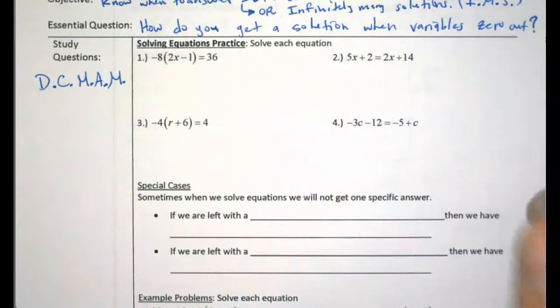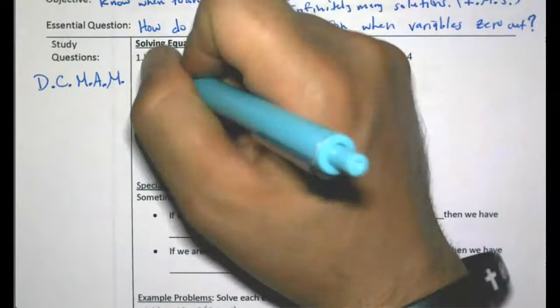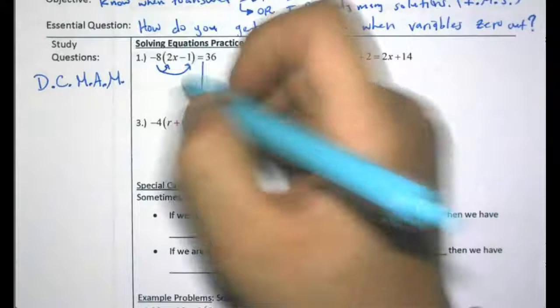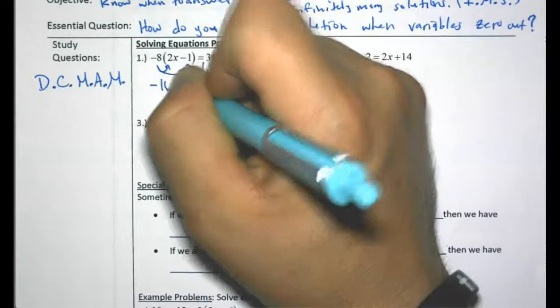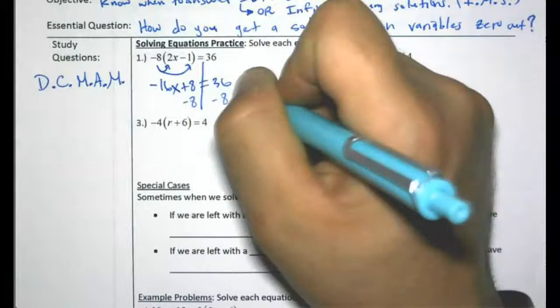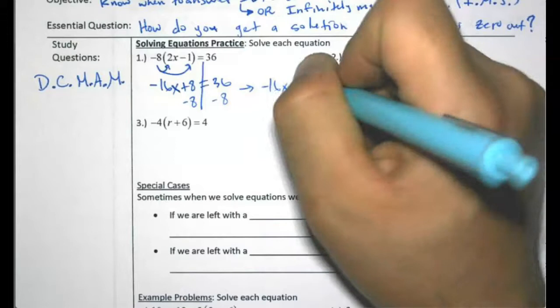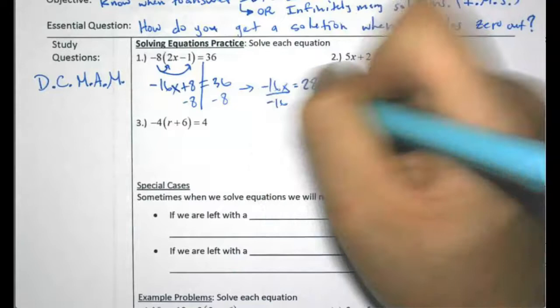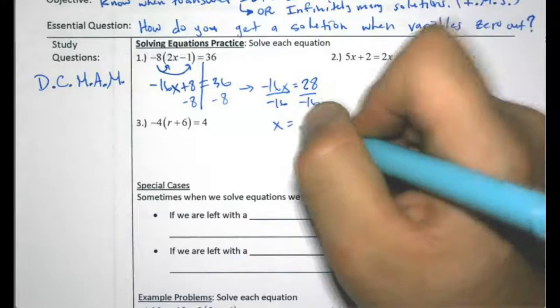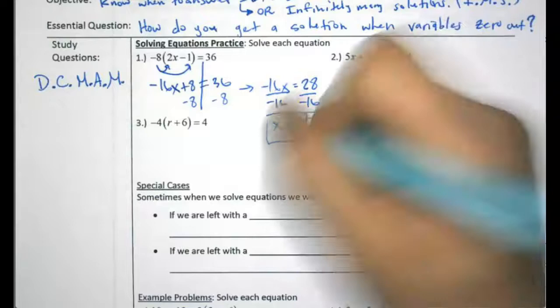These right here are just practice. I distribute first — negative 8 times 2 is negative 16x, negative 8 times negative 1 is plus 8, equals 36. I'm going to subtract 8 on both sides, and that will mean negative 16x equals 28. I divide by negative 16 and get a fraction — I can reduce by dividing by 4: 28 divided by 4 is 7, 16 divided by 4 is 4, so x equals negative 7 fourths.